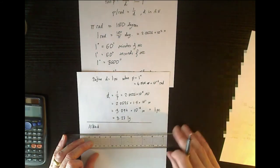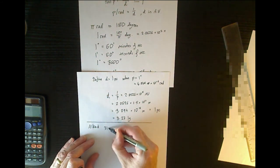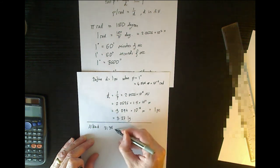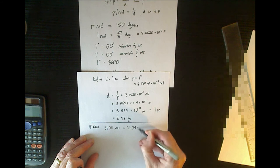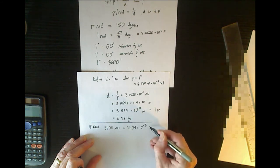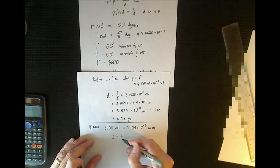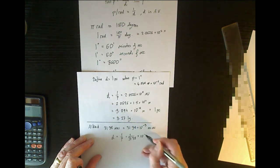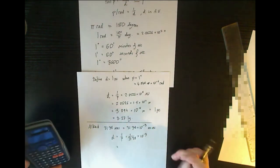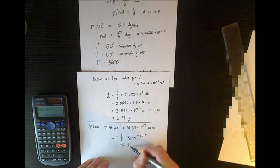So taking Alcaide as an example, Alcaide has a parallax of 31.38 milli arc seconds, which is 31.38 times 10 to the minus 3 arc seconds. Distance equals 1 divided by P would be 1 divided by 31.38 times 10 to the minus 3, which is 31.87 parsecs.